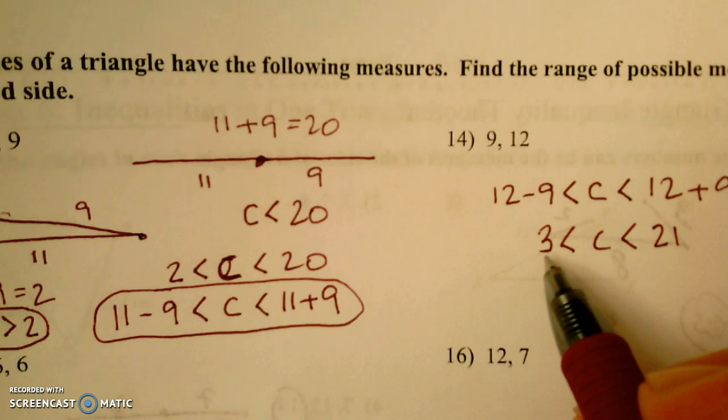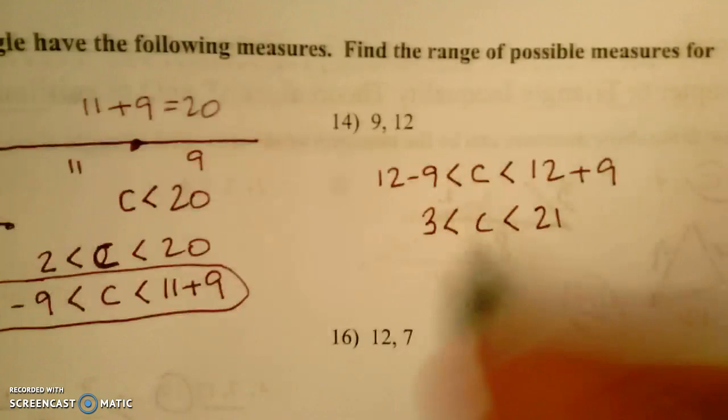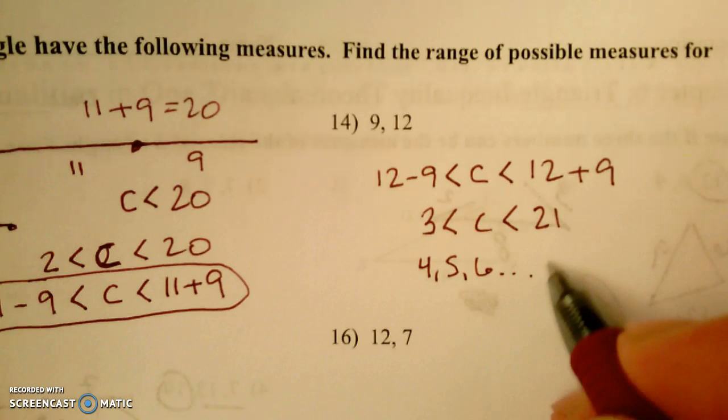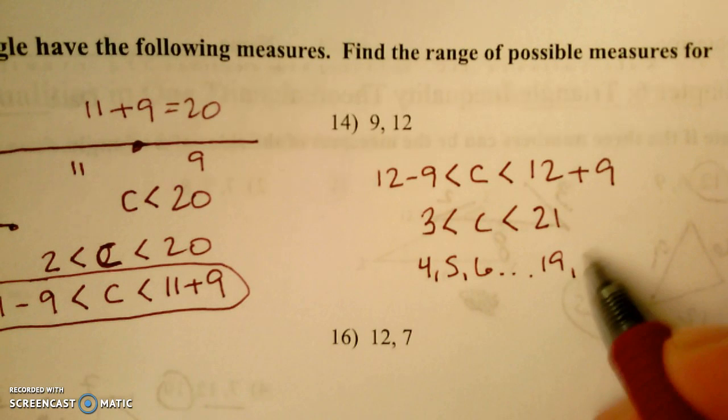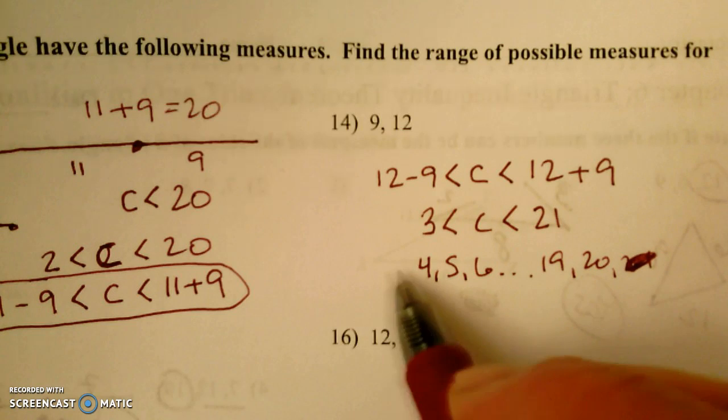Keep in mind it can't be 3 and it can't be 21. It could be 4, 5, 6, dot dot dot, 19, 20, but not 21. Of course it could also be...